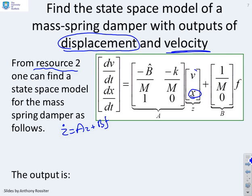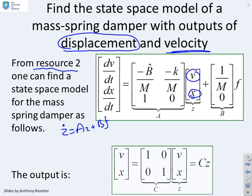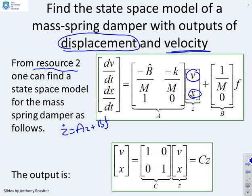Now I've been asked to extract as outputs the displacement, which is x, and the velocity, which is v. So I can do that by defining a C matrix like this. You'll see that the C I've written as an identity. The top row extracts the velocity, and the second row extracts the displacement. Now I can put it the other way up if I want to. That's entirely up to me.